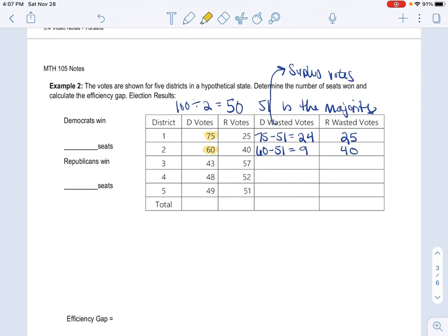Now, when you look in the next district, the Republican won, but once again, we only needed 51, so six were wasted, where all 43 were wasted for the Democrat.